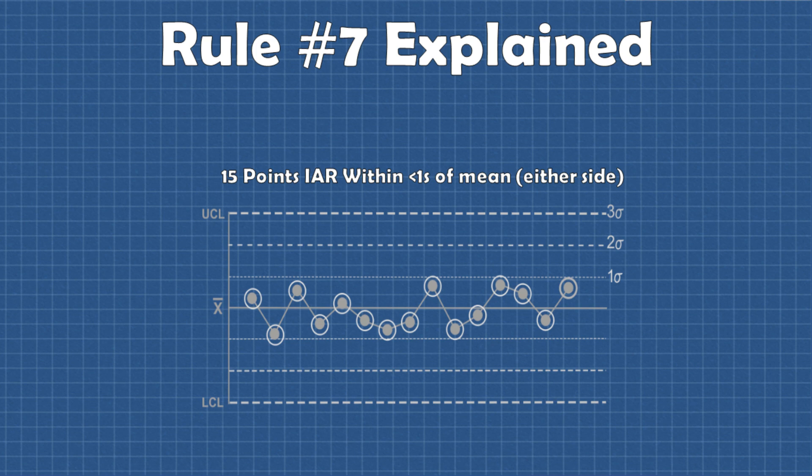Using rule seven in this way should only be used when setting up the control chart. If this pattern is detected you should always go back and look at your subgrouping method and make sure rational subgroups were used.